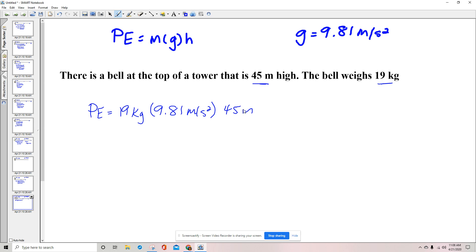And that's going to give me 8,387.55. That's kilograms times meters squared per second squared. So I'm going to round this up to 8,388 because of the 0.55. It's going to be 8,388 joules.